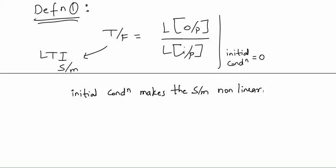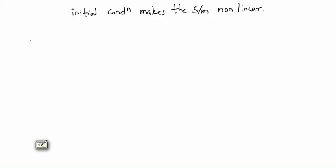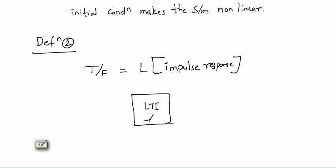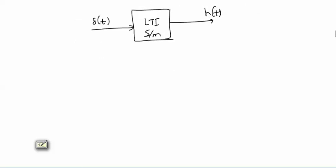Definition number two: the transfer function is the Laplace transform of the impulse response. If you apply an impulse input delta(t) to an LTI system, whatever output you get is called the impulse response. This second definition is actually a derivation of the first definition.